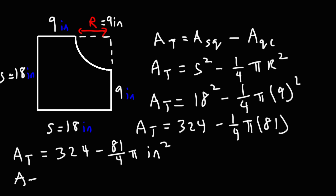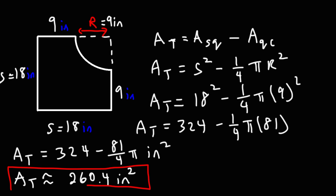Now let's get our rounded answer. If you plug in 324 minus 81 pi over 4 in your calculator, you should get approximately 260.4 square inches, rounded to the nearest tenth. So that's going to be the area of the shaded region, or the composite figure.